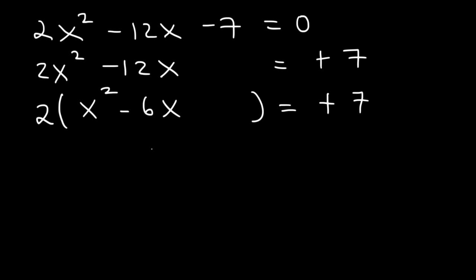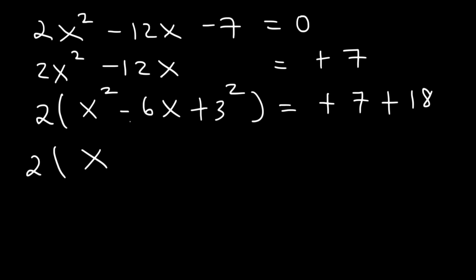Half of 6 is 3. And we need to square it. So I've added not just 9 to the left side, but 9 times 2, which is 18. Whatever you do to the left side, you must also do to the right side, so I have to add positive 18 to the right side. Now to factor x squared minus 6x plus 3 squared, it's going to be x minus this number, squared. x squared minus 6x plus 9 is x minus 3 times x minus 3. And then 7 plus 18, that's 25.